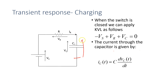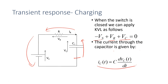Starting at this point and going around the loop: we go up by Vc, then up by Vr, then down by Vs. The current I in the circuit is the same as the current through the capacitor, since all elements are in series, and equals C·dVc/dt. Note this is dVc — the voltage across the capacitor — not the voltage across the resistor. The current going down into the capacitor, which is the same direction as Ir, equals C·dVc/dt.